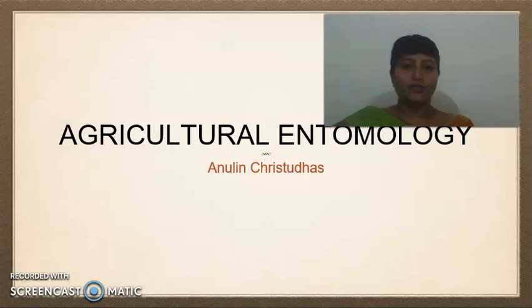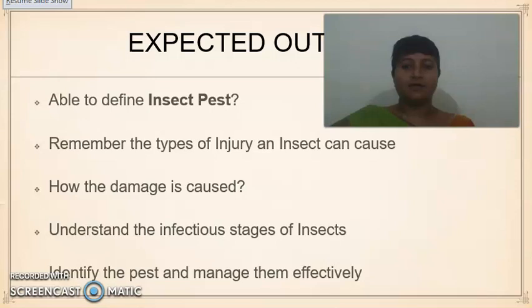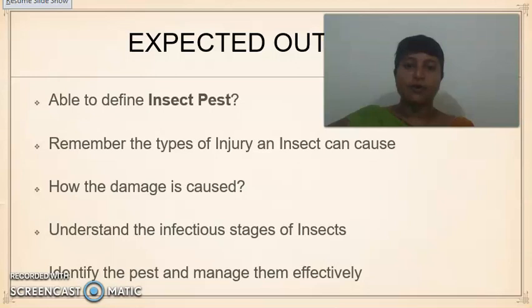Welcome to this class on agricultural entomology. Today's topic is insect pests. You will be learning about what an insect pest is and what types of injury an insect pest could cause on crops like paddy, sugarcane, coconut, vegetables, fruits, etc. Based on this understanding, you will be able to identify the pest in a particular crop and manage them effectively.